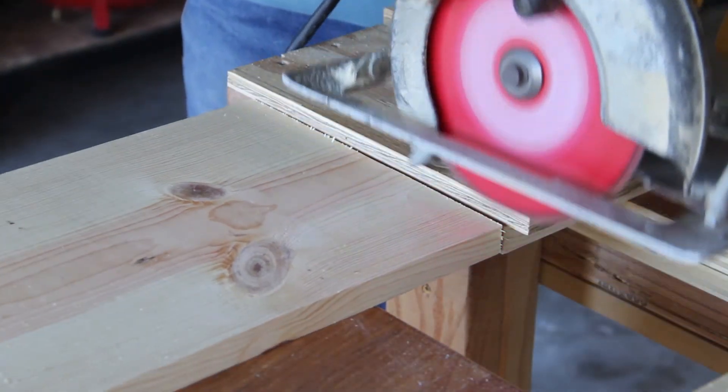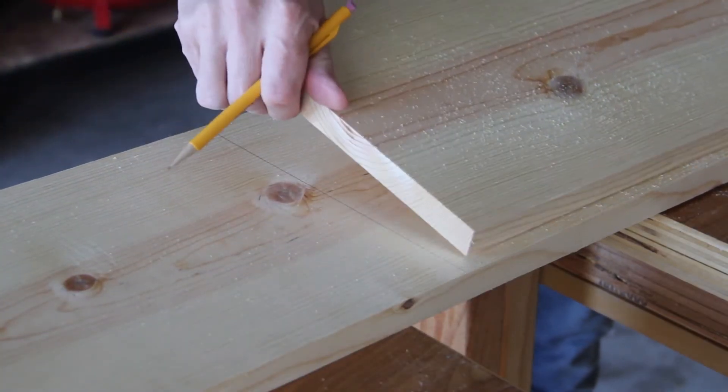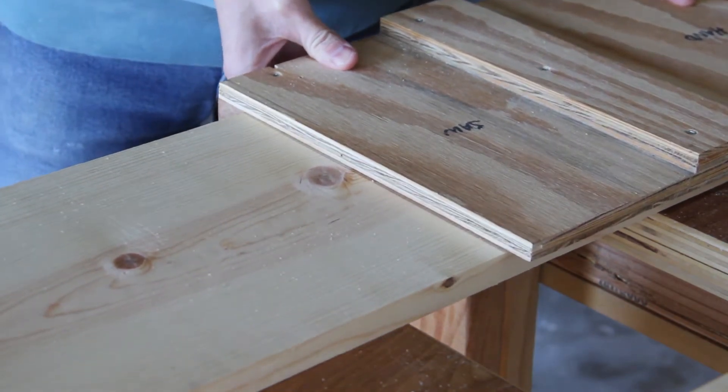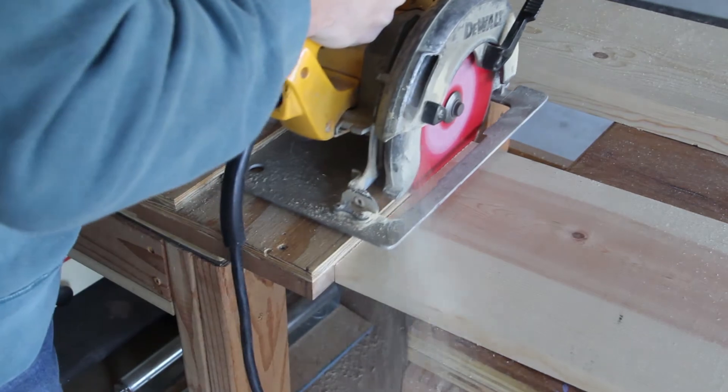These 1x10s are for the shelves and side panels. First I cut them down to the correct lengths with the circular saw using my crosscut jig, and this jig is calibrated to always cut a perfect right angle. I just line it up with my pencil mark and then press the jig into the board.